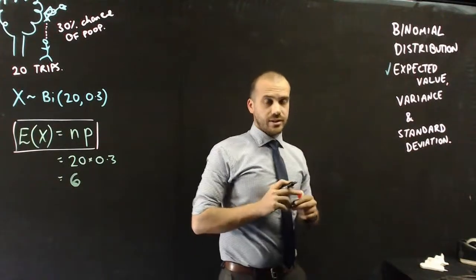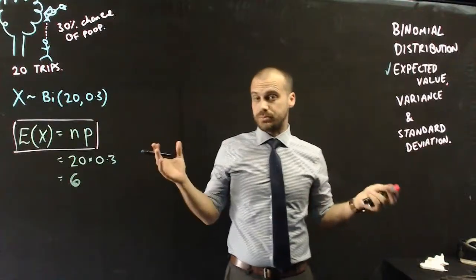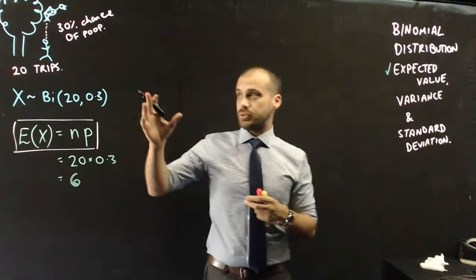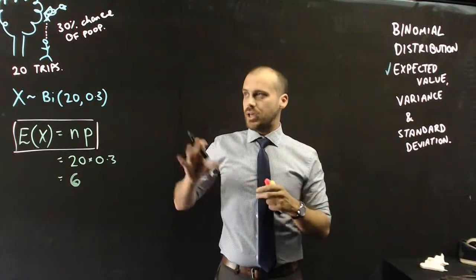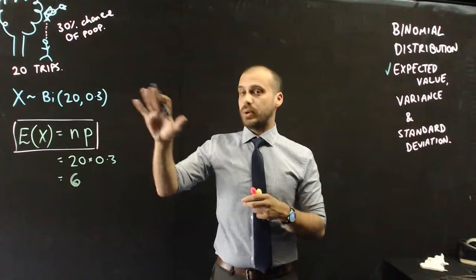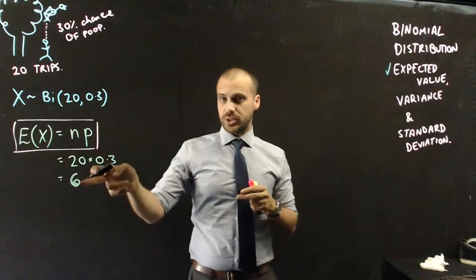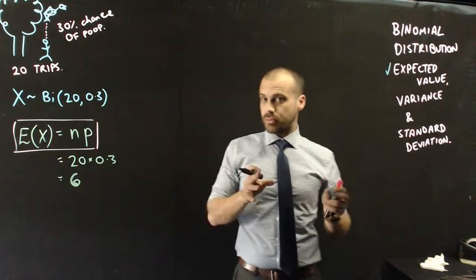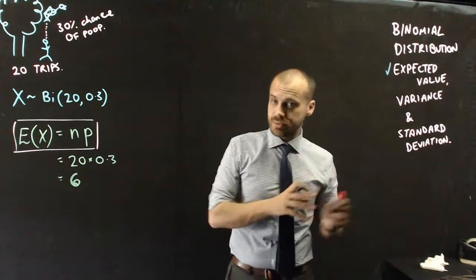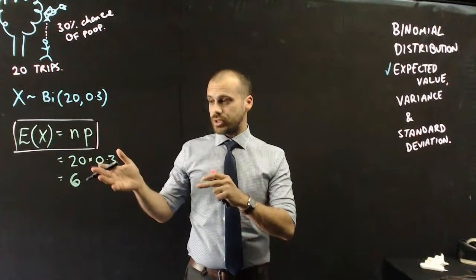Now, we need to look at variance. Variance is a measure of spread. If you had 50 people make 20 trips underneath this tree, some of them would get pooped on exactly 6 times, some of them would get pooped on 10 times, some of them would get pooped on 2 times.